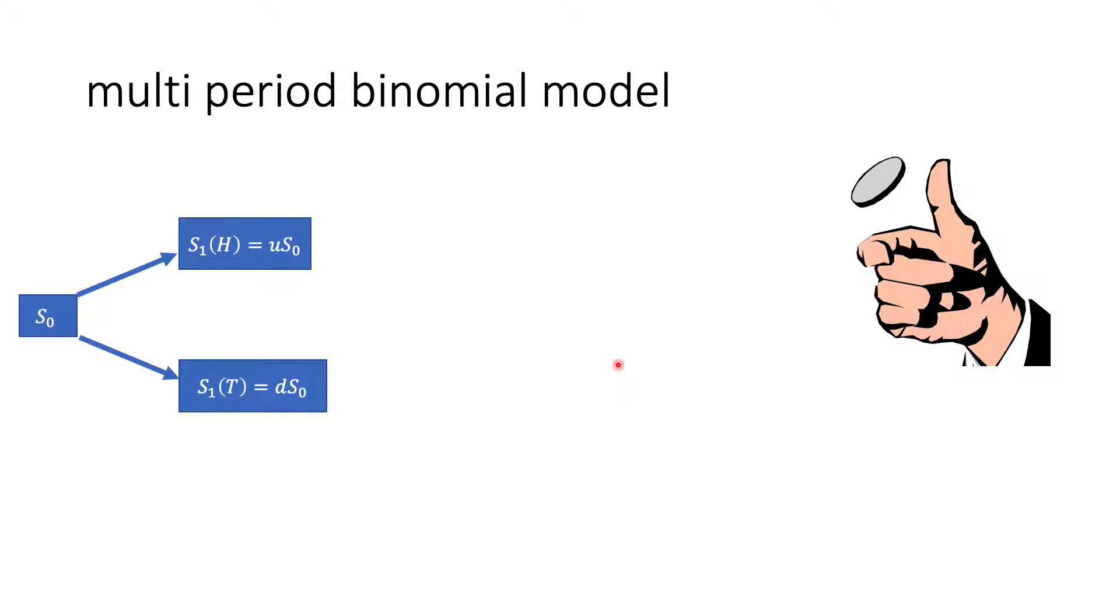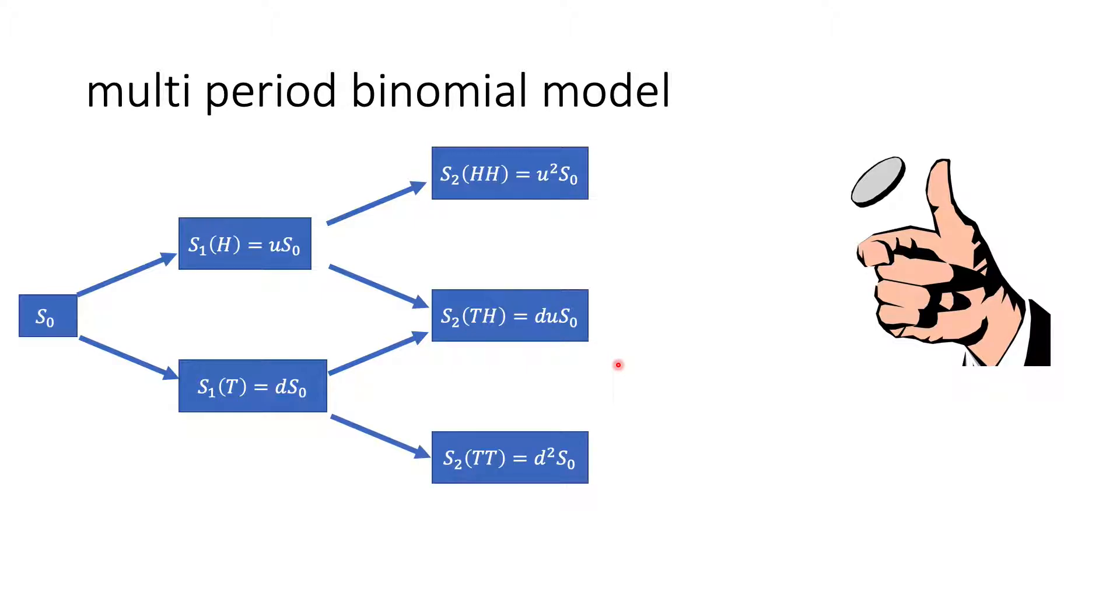We keep tossing the coin again, these are the possible outcomes from the first coin toss. We can get head twice, so the stock price will go up to U² S0. Or we can get a head then a tail, or a tail then a head, and it will still lead to DU S0. We can get tail twice, and it will go down to D² S0.